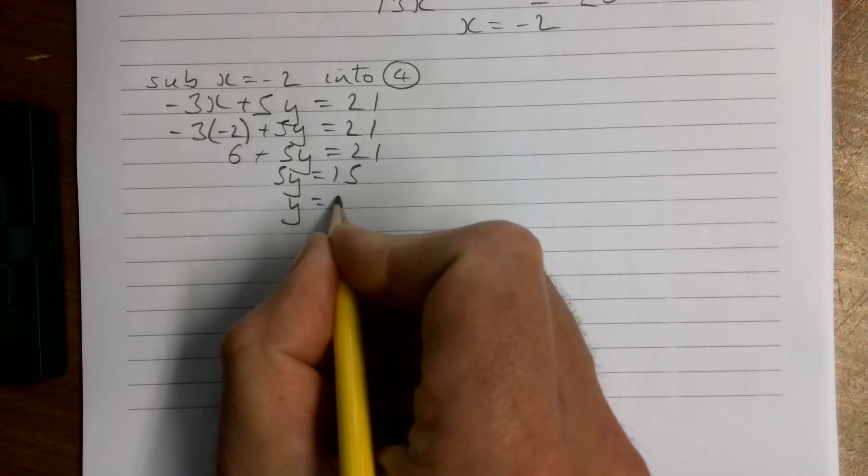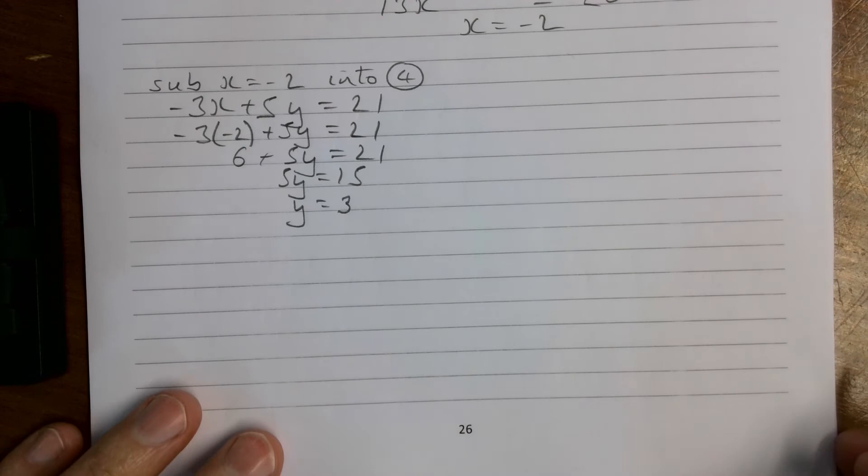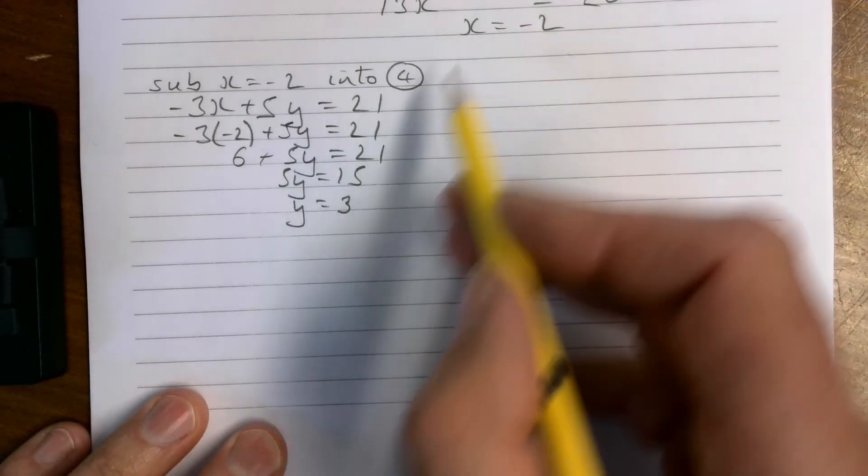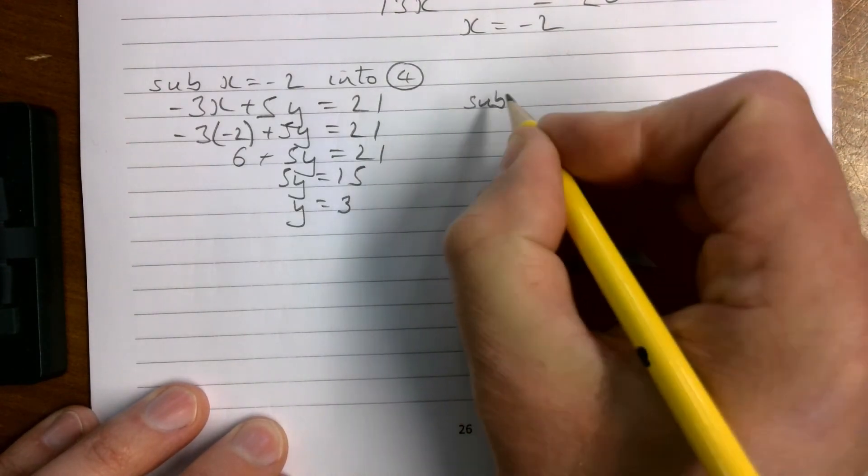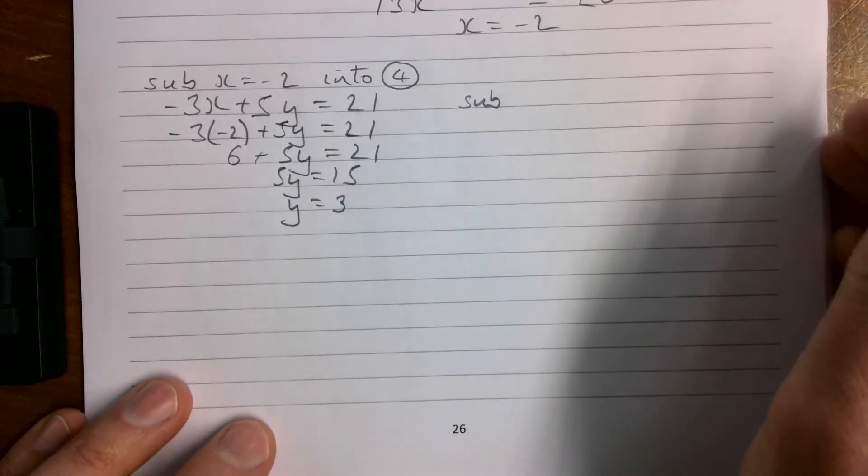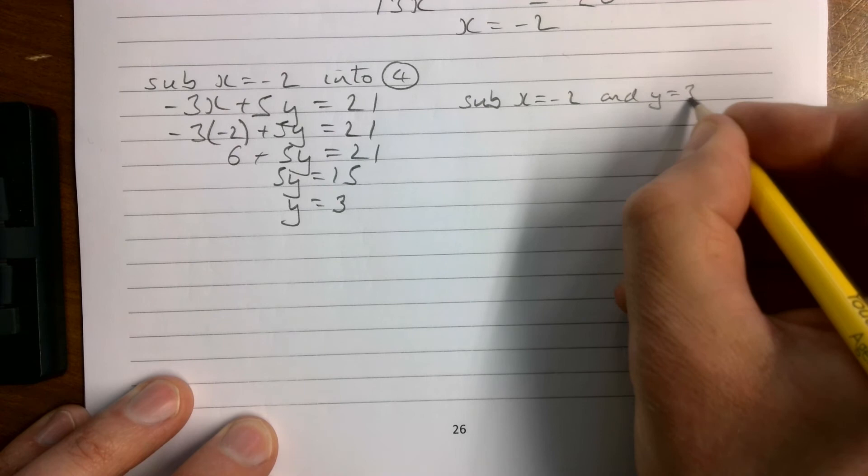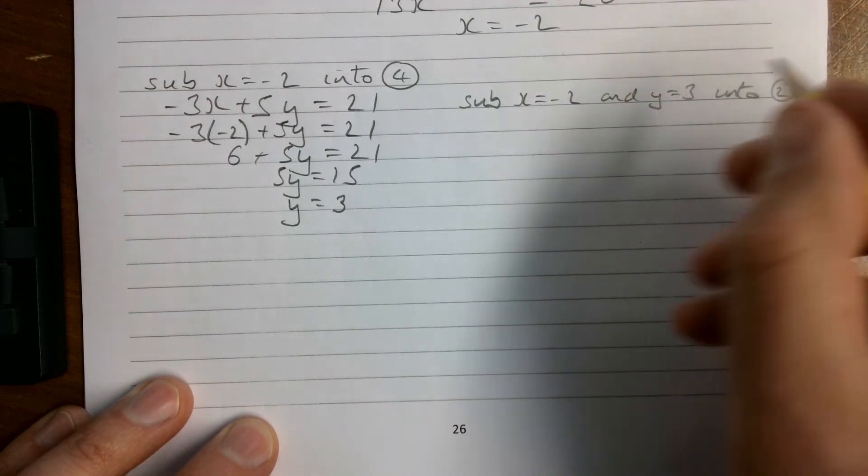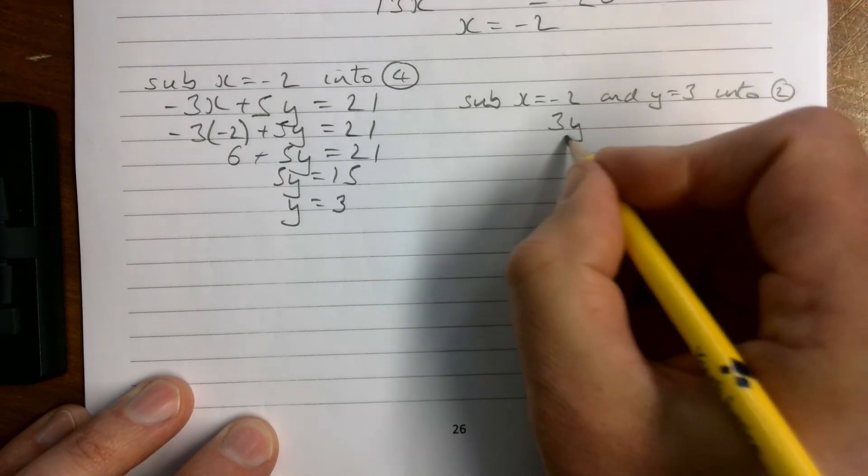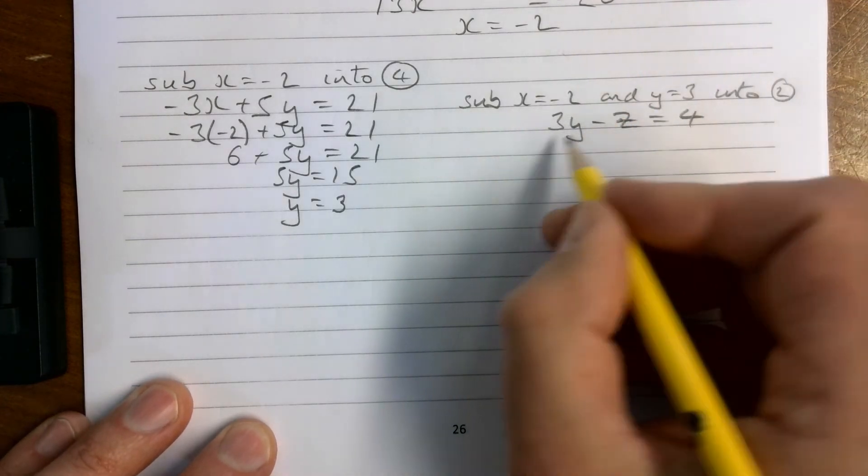That gives me 6 plus 5y is 21, so 5y is 15 and y equals 3. We then need to pick one of the equations, and let's substitute it into number 2 to work out z. So we're going to substitute x equals minus 2 and y equals 3 into equation 2. Equation 2 is 3y minus z equals 4.